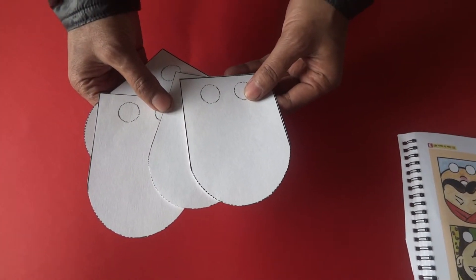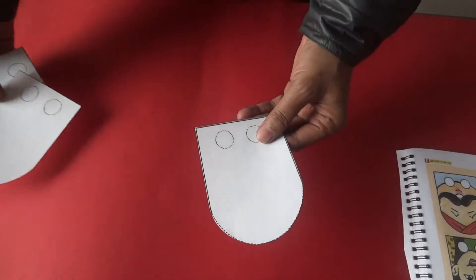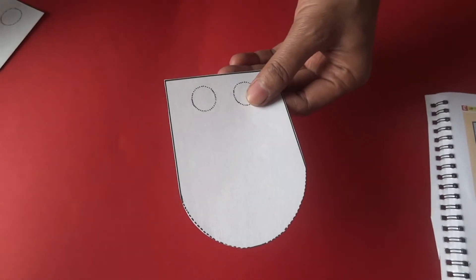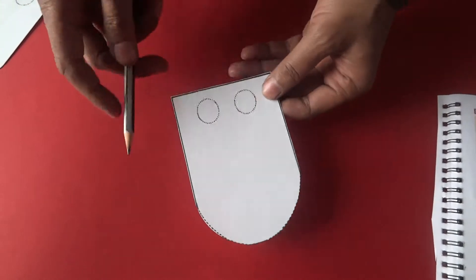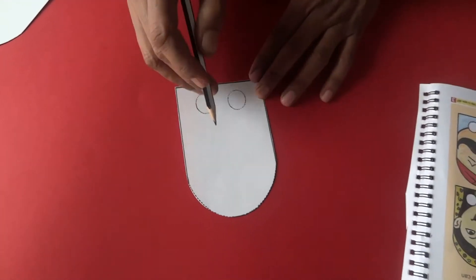We have the cutouts now. Let us make one of them. We have to make an interesting face on this cutout. So let us make the face with the pencil first.